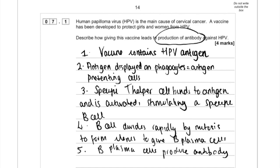That will then stimulate a specific B cell. This specific B cell will have a specific receptor on its surface, which is actually an antibody, and that will also bind to the antigen. This will cause the B cells to divide rapidly by mitosis, forming clones which will become B plasma cells, and these B plasma cells will go on to produce the antibody.